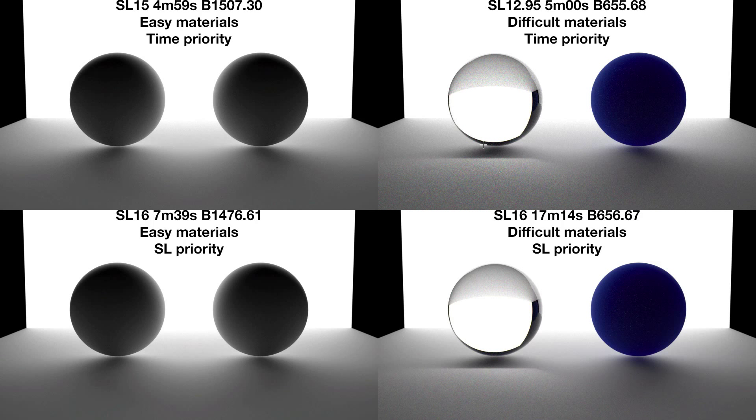First off, Maxwell Render is an unbiased render engine. That means it renders the whole image incrementally until it is told to stop by the user. Visually this can be seen as noise in the rendered image. Images start off full of noise and gradually get cleaner as they reach their higher sampling levels.